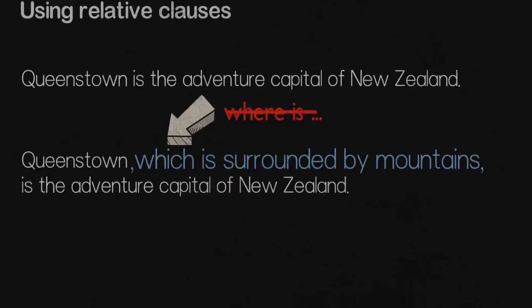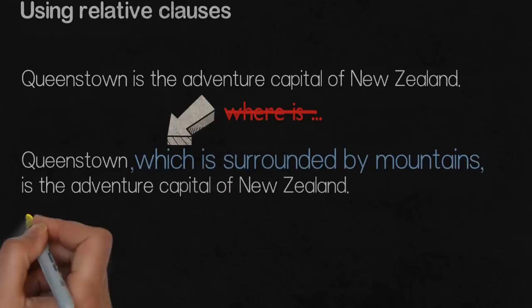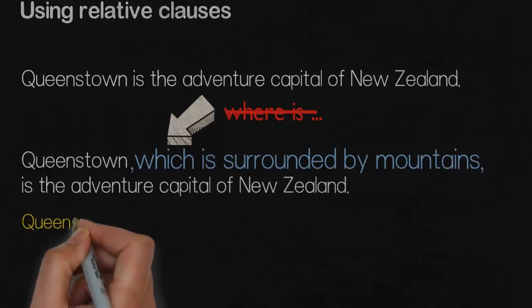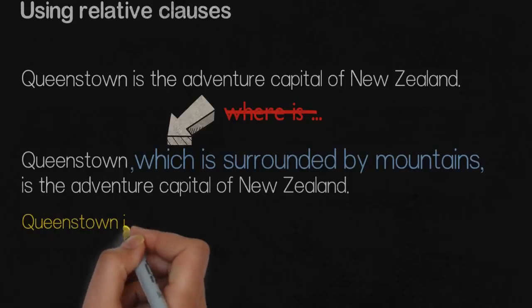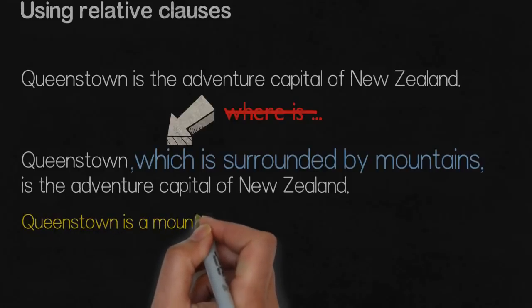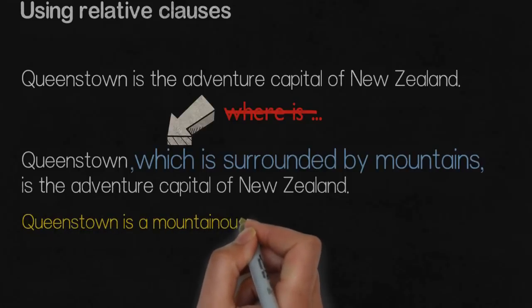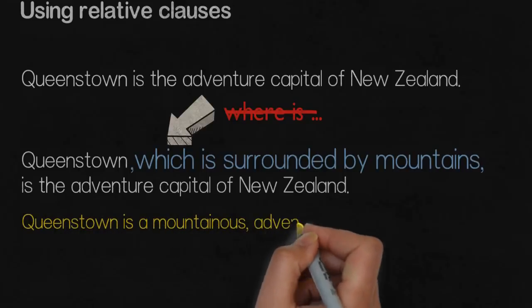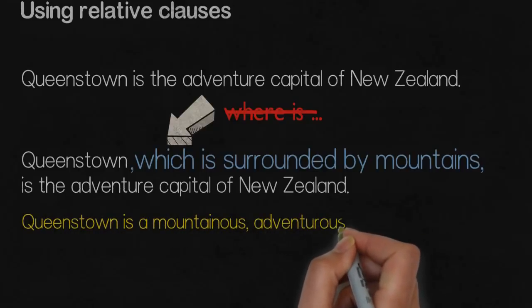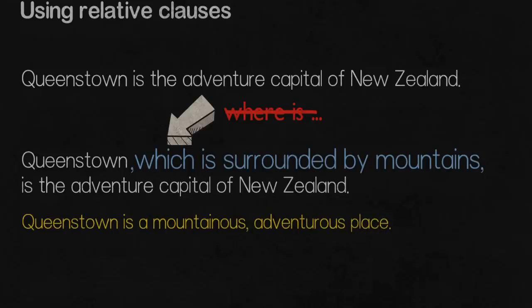Really, it's like an adjective. So we could say it another way as well: Queenstown is a mountainous, adventurous place. But we want to use this relative clause if there's something more complicated we would like to put in there.